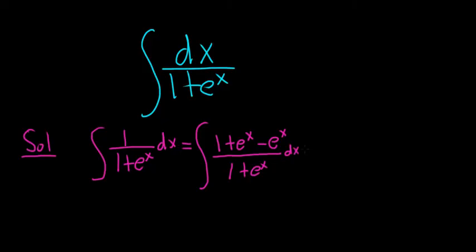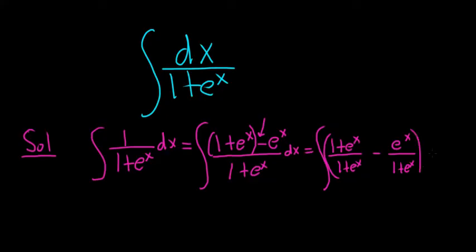You might say, why would you do this? Because then the magic happens. You think of this as 1 plus e to the x. So this is 1 plus e to the x over 1 plus e to the x minus e to the x over 1 plus e to the x. This is a super important skill in mathematics.